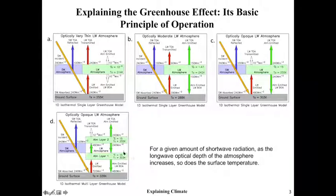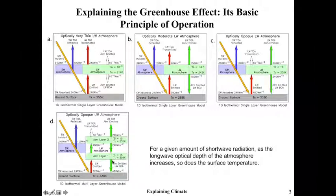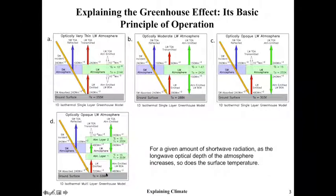Now, with two such layers totally separated but only interacting radiatively, this essentially doubles the increase — giving you an additional 240 watts, making like 720 watts from the ground while still 240 watts goes out from the top of the atmosphere. This illustrates that the greenhouse effect does not saturate. The absorption within a layer may saturate, but the net greenhouse effect does not. So if we keep adding more opacity into the atmosphere, it keeps getting hotter at the surface for the same incoming solar radiation.